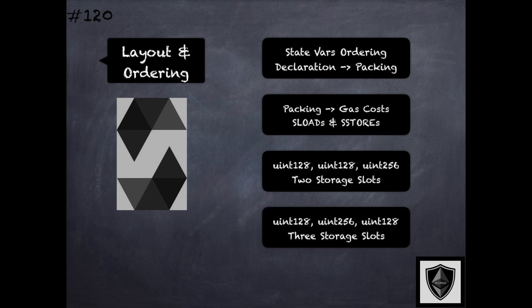But if the declaration order is slightly changed to put the 256-bit state variable in between the two 128-bit variables, this order would require three storage slots instead of two. The first 128-bit one goes into slot 0, the 256-bit one would not fit within slot 0 and takes all of slot 1, and the third state variable takes slot 2. This hopefully gives you an idea of how the state variable declaration order impacts the number of storage slots and therefore has a big impact on gas costs.